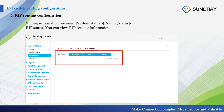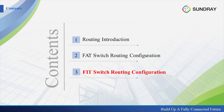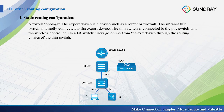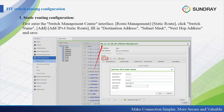For the fade switch routing configuration, the static routing configuration network topology has the WAC connecting to the switch, to the feed switch. The feed switch connects to the secondary PoE switch, and connects to the PC and the exit point. We enter the switch management center, and under route management there is the static route. In the static route, for each switch, we can add an IPv4 static route. It is very easy to add.